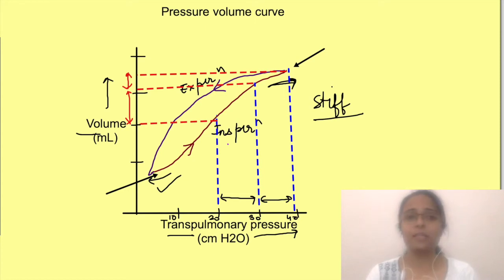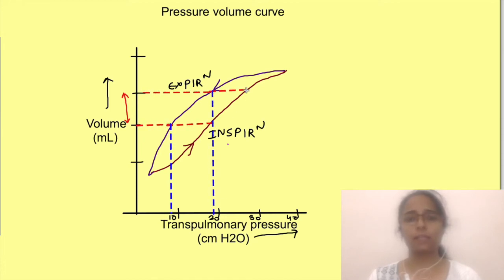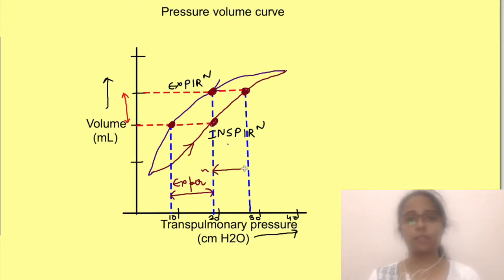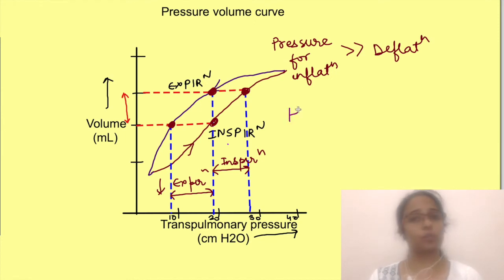Now let's look at why the inspiration and expiration graphs are different. If we take two volume points and extend to the transpulmonary pressure for both inspiration and expiration lines, the pressure values are much lesser for the expiration graph. This means the pressure required to inflate the lungs is much greater than the pressure required to deflate them. This phenomenon of the lung behaving differently during inflation and deflation is known as hysteresis.